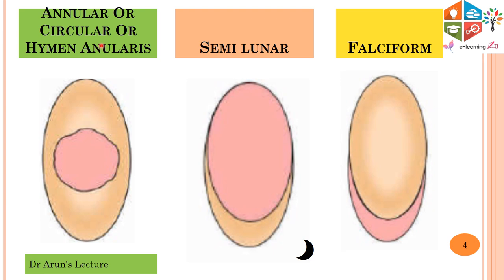The synonyms for annular are circular and hymen annularis, and here the opening is circular and central. In the case of semilunar, it almost looks like the shape of a crescent. And in the case of the falciform type of hymen, we have a sickle-shaped opening.